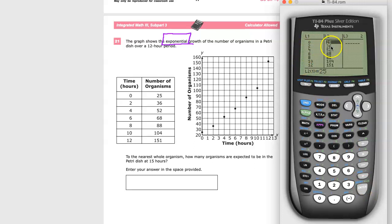0 and 25, 2 and 36, 4 and 52, 6 and 68, 8 and 88, 10 and 104, and 12 and 151. So anything in that general area is how you're going to do it. Just make sure they're not mixed up because then it'll give you a weird answer.